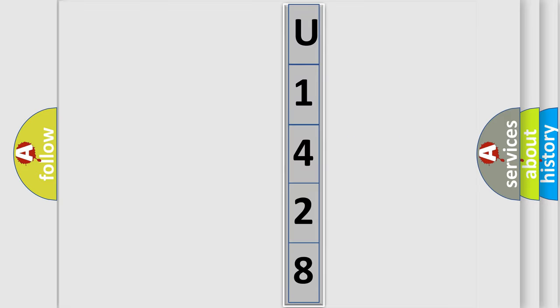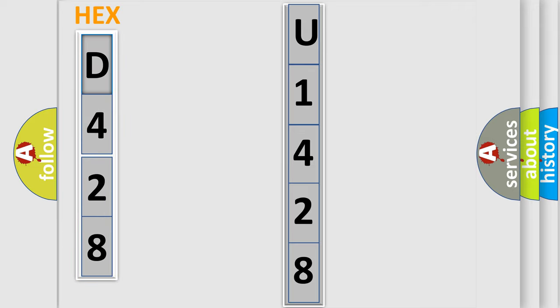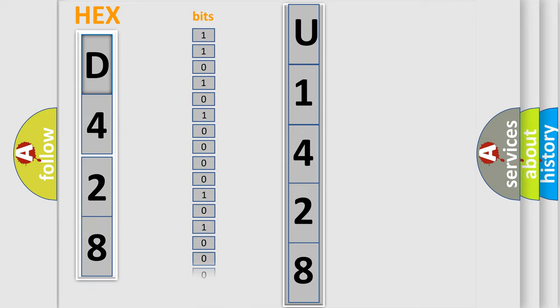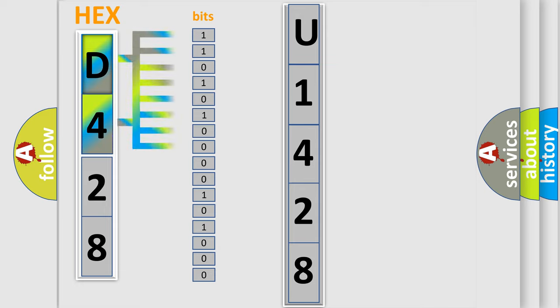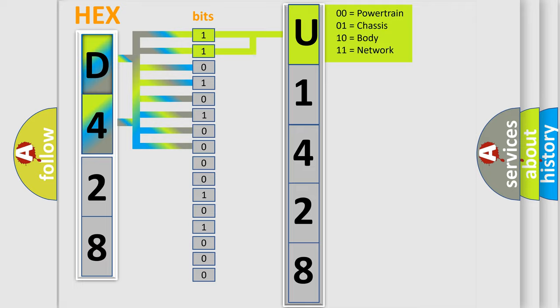The error code is split into two bytes consisting of 16 bits. One bit is the basic unit that each computer works with. The bit has two logical states: zero, low level, and one, high level. By combining the first two bits, the basic character of the error code is expressed.